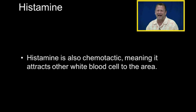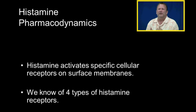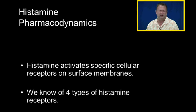Histamine is chemotactic, meaning it attracts other white blood cells to the area. Histamine activates specific cellular receptors on surface membranes. We know of four types of histamine receptors; in this course you'll need to know H1 and H2.